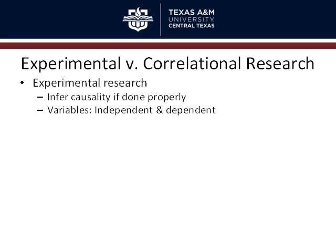The independent variable is the one the researcher manipulates — where there'll be something done differently to one group than another. It could be an instructional manipulation, like telling one group one thing and another group something else, or an environmental manipulation. For any independent variable you have, there have to be at least two levels, because it has to be variable — if it has one level, it doesn't vary. So always at least two levels of an independent variable, and they're typically categorical. You could have three levels — level A, level B, or level C, or more.